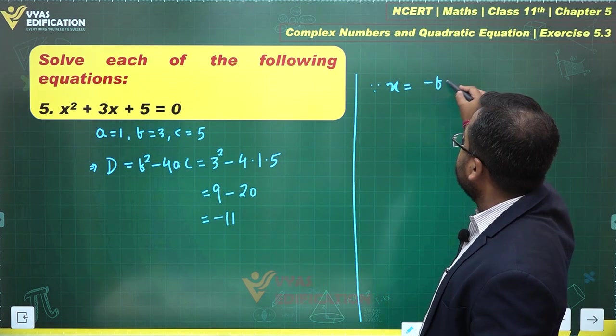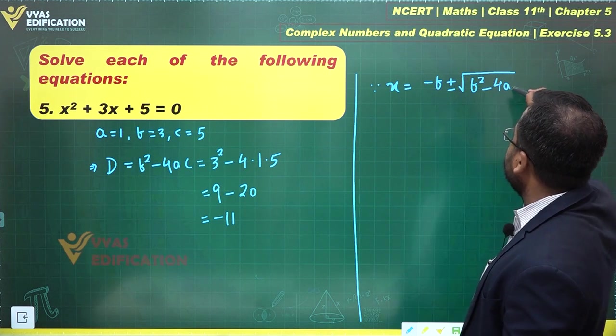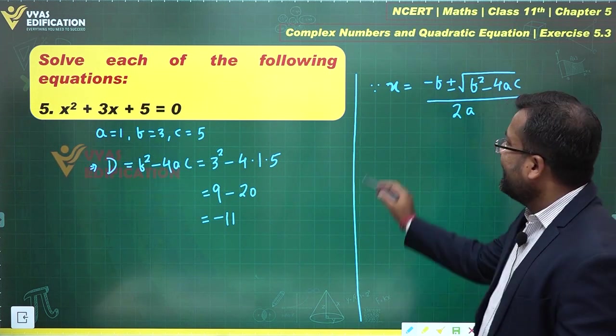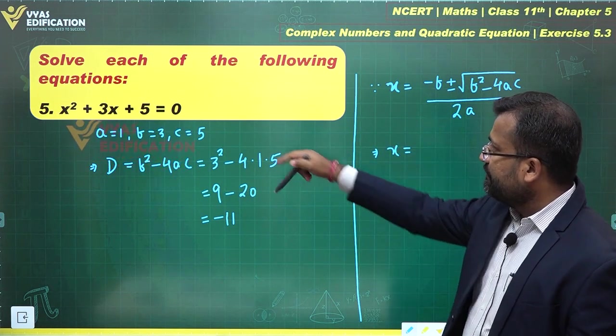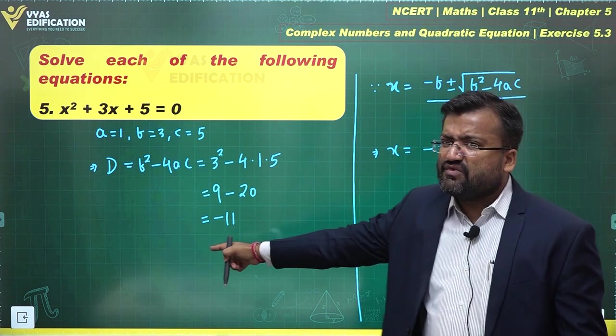Since x equals minus b plus or minus the square root of b squared minus 4ac upon 2a, what does this imply? This implies that x equals minus b plus or minus the square root of b squared minus 4ac, which is minus 11, upon 2 times a.